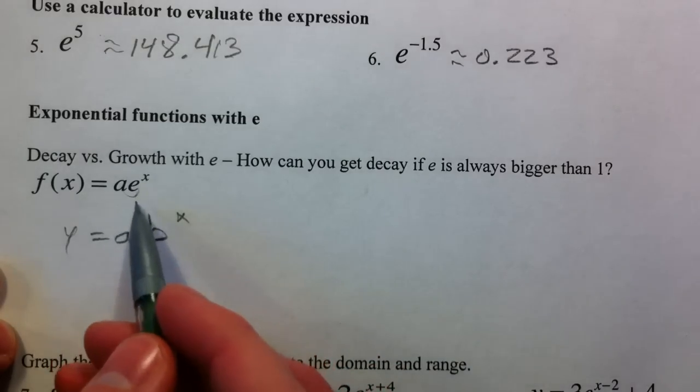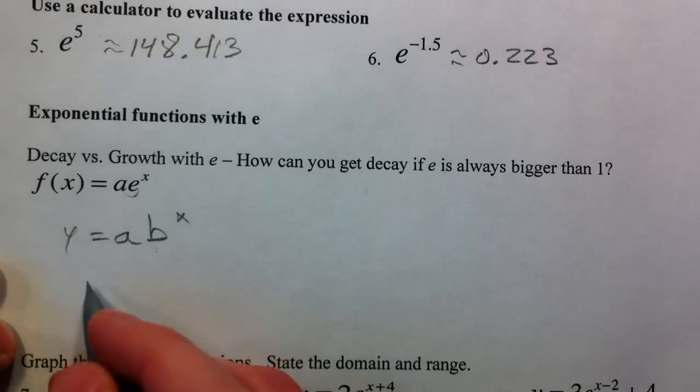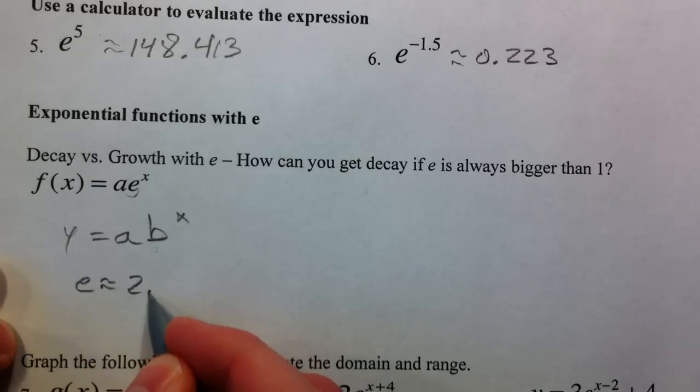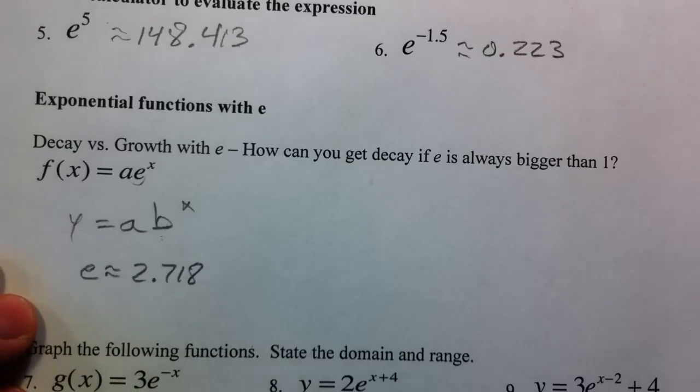The problem is now e is always our b, and e is approximately 2.718. So e is always going to be bigger than 1.